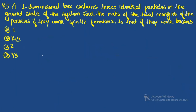Question four: a one-dimensional box contains three identical particles. In the ground state of the system, find the ratio of the total energies of the particles if they were spin-½ particles (fermions) to that if they were bosons.